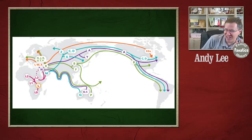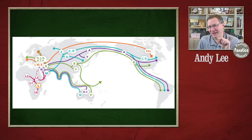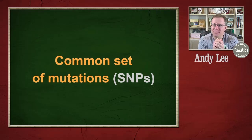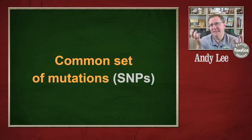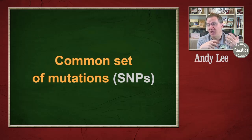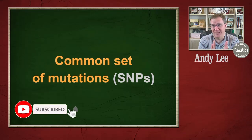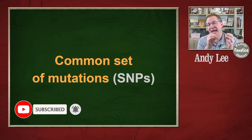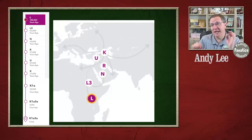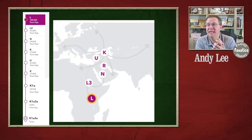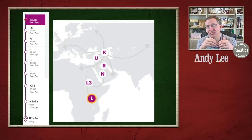But that still doesn't tell us what these letters mean. In essence, a haplogroup denotes a common set of mutations — and when I'm talking about mutations, I'm talking about SNPs: specific places on our DNA where the letter has been changed. If I go to 23andMe and pull up my haplogroup report, it's actually going to show me how that haplogroup has migrated and changed over time.